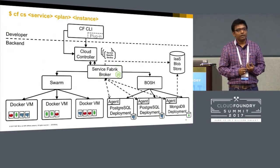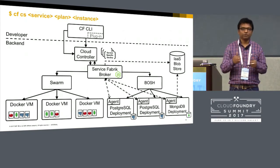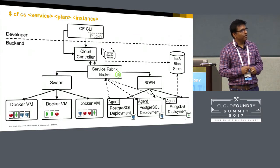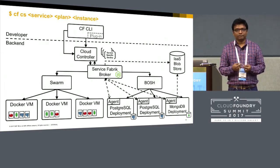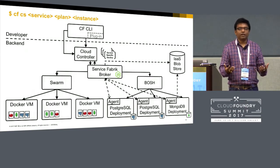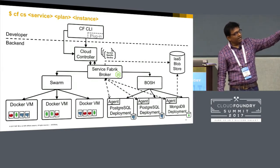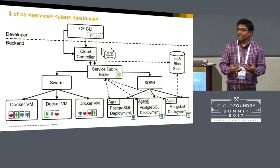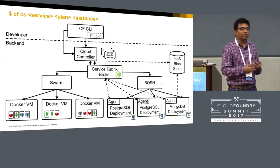The agent can take metrics and events out of the virtual machine and send them to the central monitoring system. We have Grafana for this — metrics go to Riemann, which stores them into InfluxDB, and from there Grafana pulls and displays them. So you have a Service Fabric broker that talks to Swarm for Docker services and to BOSH for production-grade services. It's a matter of seconds or minutes before your cluster is up. The IaaS blob store — on Amazon we store backups on S3, on OpenStack we store them in Swift.